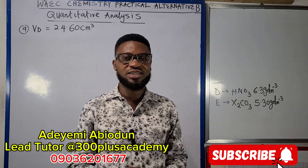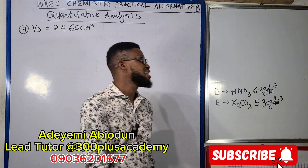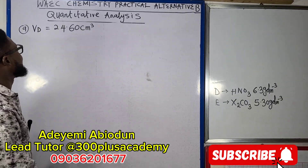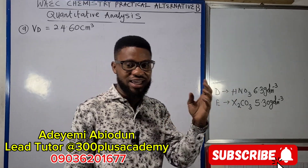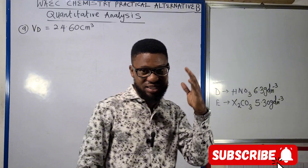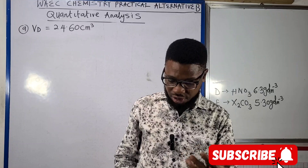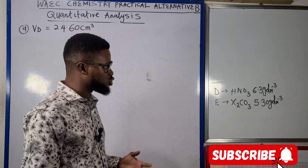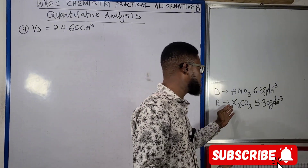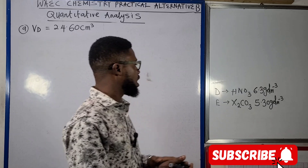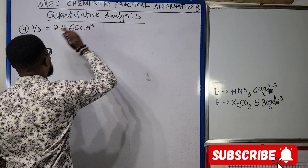Good day viewers, this is 300 Plus Academy where all we do is exams tutoring. Still on the business of chemistry practical alternative B — this time talking about the fast-approaching alternative B chemistry practical. We're looking at a titration between a dilute nitrate acid and a certain carbonate labeled X₂CO₃. This is lecture video five for quantitative analysis.